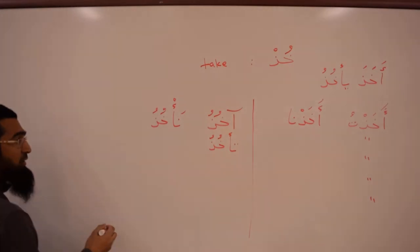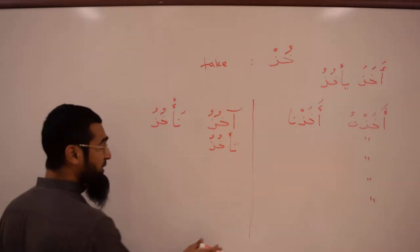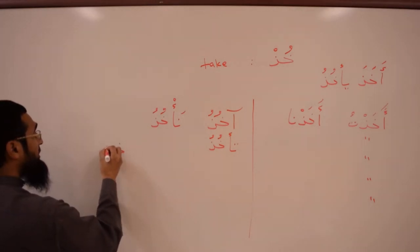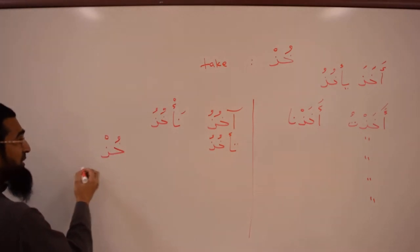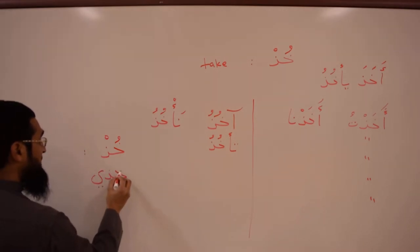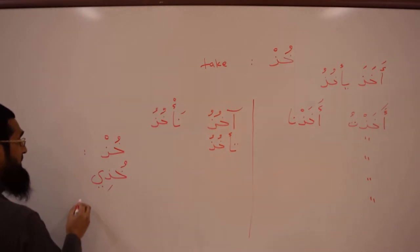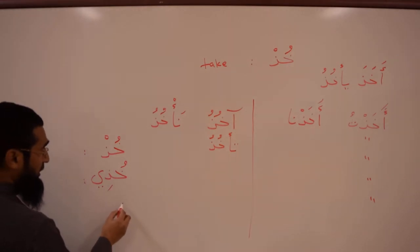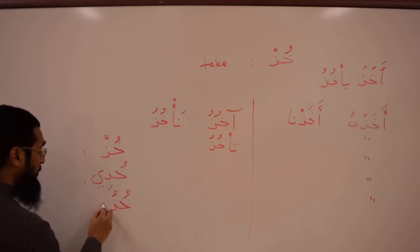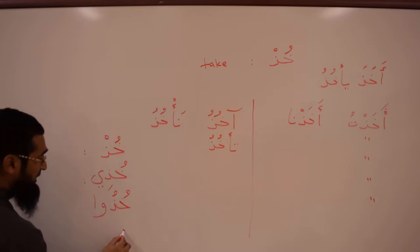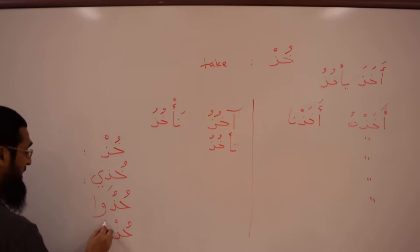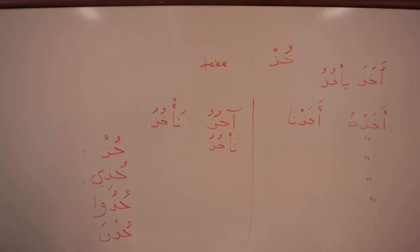The Amr — whenever we do the Amr, we learn four different versions. Khud, which means 'take,' if you're speaking to a male. Khudhi, if you're speaking to a female. Khudu, if you're speaking to a group (jama'). And khudna, if you're speaking to a female group.